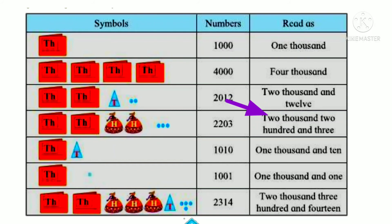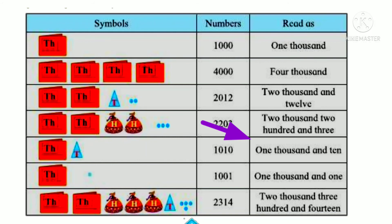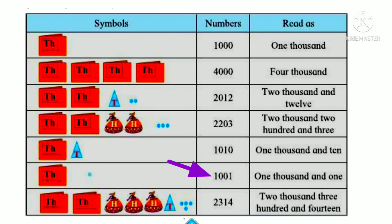Now see the next one. How many thousands are given? Only one. The hundreds place is not given. The tens place is given. The units place is not given. So we write one thousand and ten — one thousand and ten. Now see the next: the thousands place is given one time, hundreds place is not given, tens place is not given, only units place is given — one. We write one thousand, zero, zero, one — how to read it: one thousand and one.